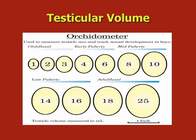For boys, the single most important parameter is testicular volume. A testicular volume of 4 ml means the child has entered puberty and we need to be aware. When the testicular volume reaches around 10 ml, that is the time when a real growth spurt occurs, and at this point, if a child is short, we can observe for some time because the child will subsequently grow.